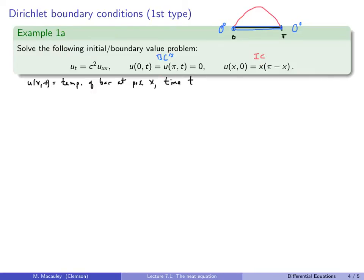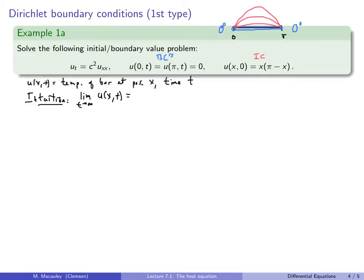These boundary conditions are called Dirichlet boundary conditions, or boundary conditions of the first type — we will see ones of the second type in the next lecture. Before we begin, let's think about what happens as time goes to infinity. The heat escapes through the endpoints, so the temperature cools off, and eventually it approaches the steady-state solution of zero degrees. From pure intuition: the limit as t → ∞ of u(x, t) = 0, and sometimes we call this the steady-state solution.